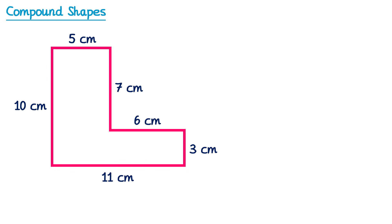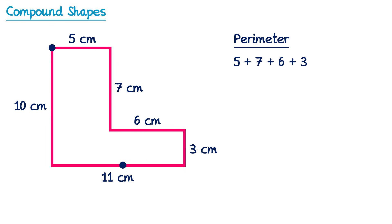Let's add some lengths onto this shape and work out its perimeter. To find the perimeter of a shape we simply add up all of the lengths of the sides. Starting in the top left and going around the shape, we've got 5, then 7, then 6, then 3, then 11, and finally 10. If you add all of these together you'll find the perimeter, which for this one is 42 centimeters.